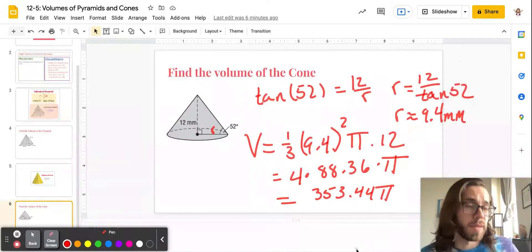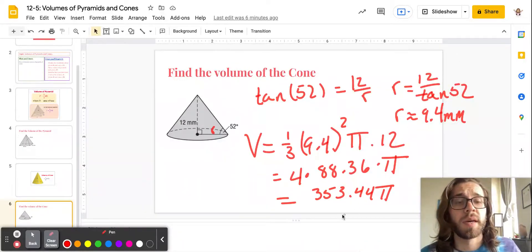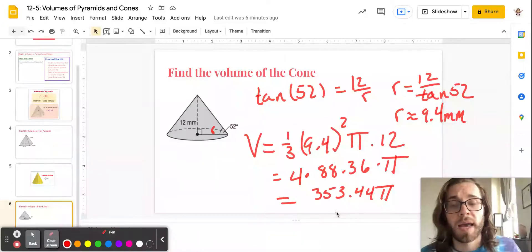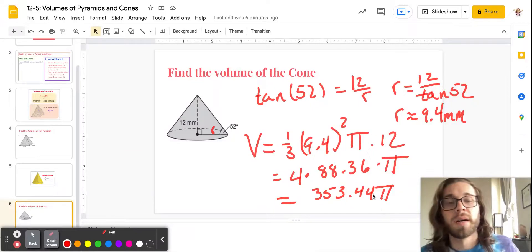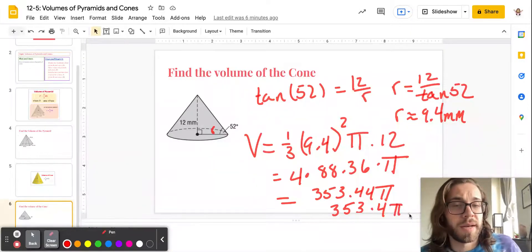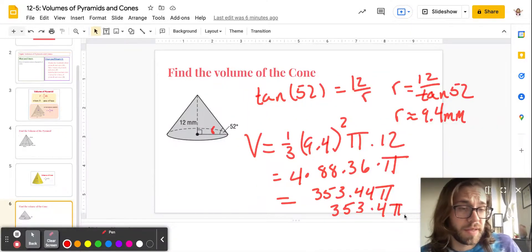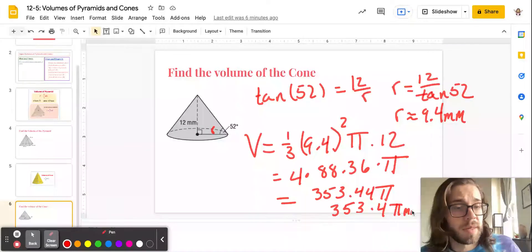Now, again, this is a situation where if it tells you to round to a certain place, you would. In this case, because I rounded here and I have this answer, I'm probably just going to leave it close to here. I believe usually they're looking for the 10th. So it would round to the 0.4. And, again, you can just leave the pi. Don't feel the need to multiply by the pi.